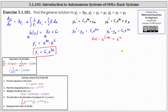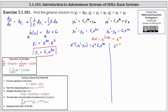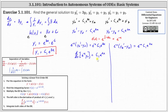We multiply both sides of each equation by e to the negative x. For the second equation, e to the negative x times the quantity y two prime minus y two equals e to the negative x times c one e to the three x. For the third, e to the negative x times the quantity y three prime minus y three equals e to the negative x times c one e to the three x. The left side of each equation is now the derivative of the integrating factor times the respective y variable. On the right, e to the negative x times e to the three x simplifies to e to the two x, giving c one e to the two x for both equations.